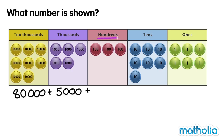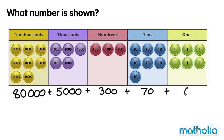In the hundreds place, there are three counters. They have a value of 300. In the tens place, there are seven counters. They have a value of 70. And finally in the ones place, there are six counters. They have a value of six.